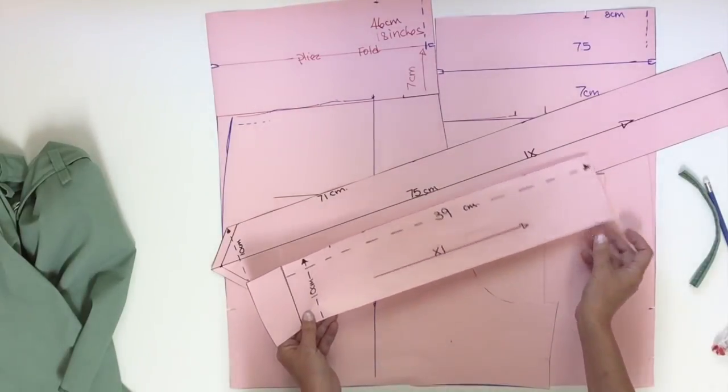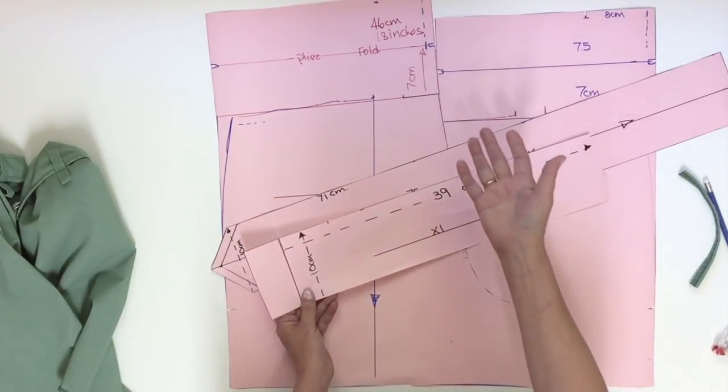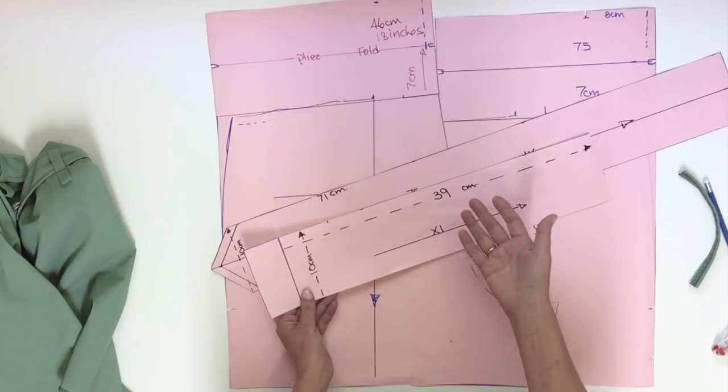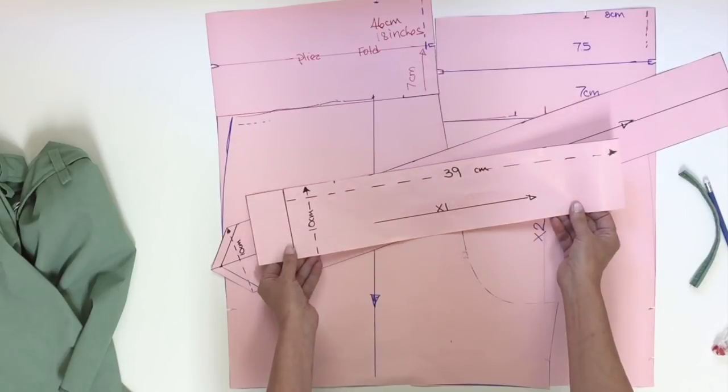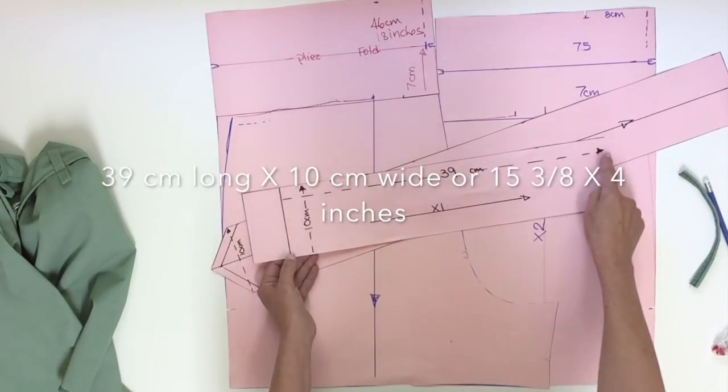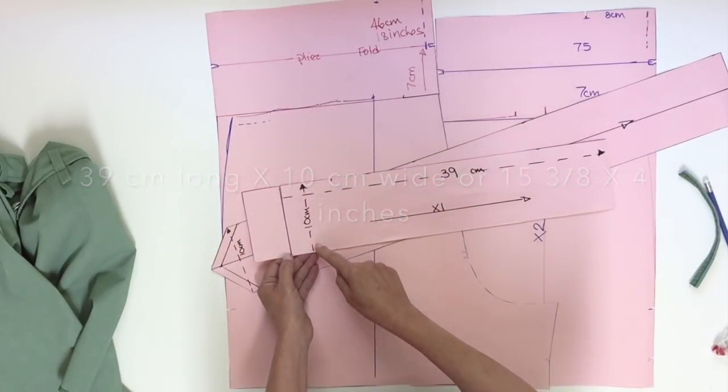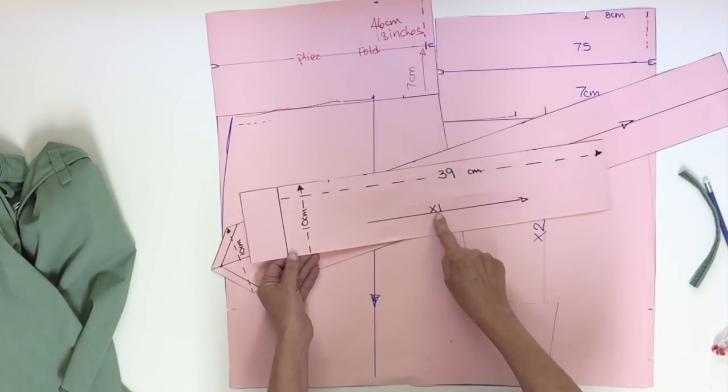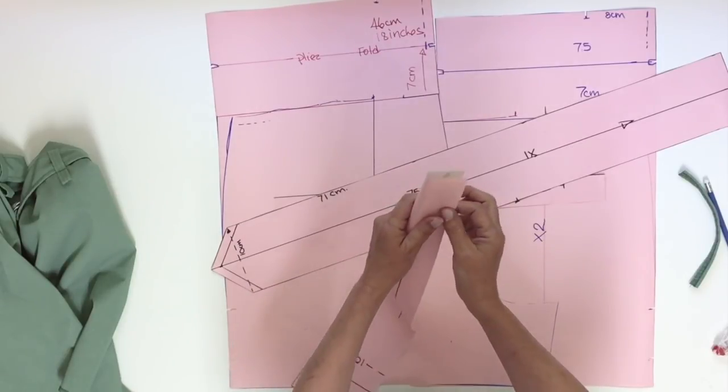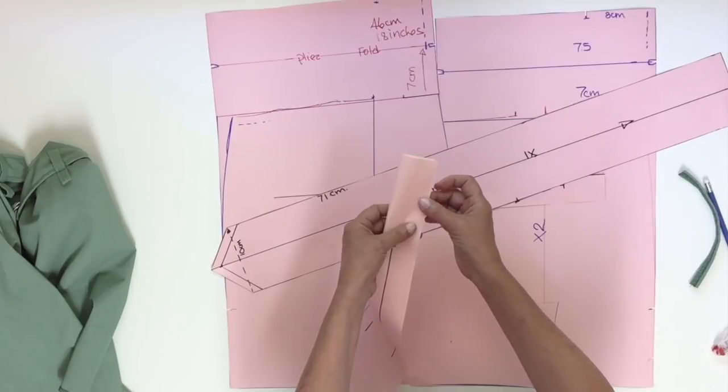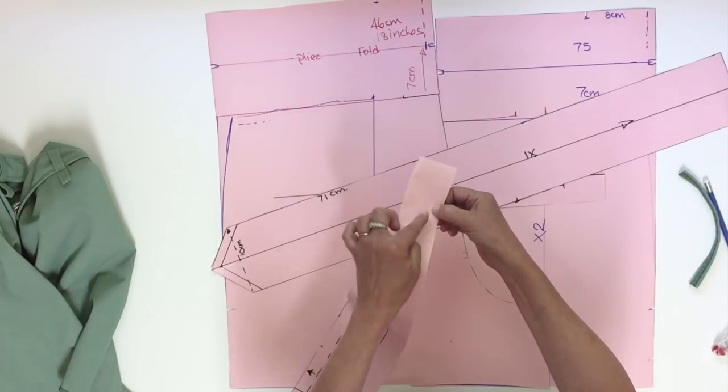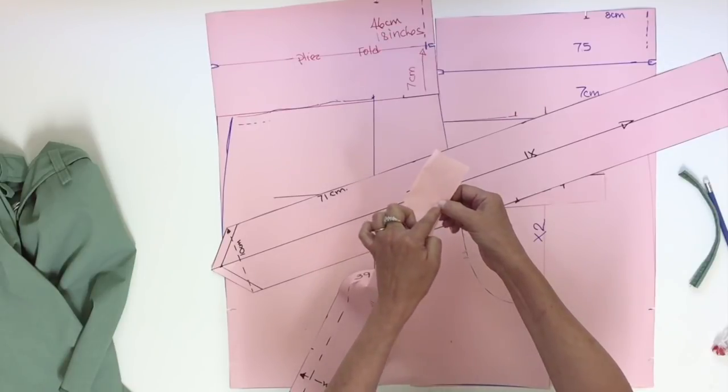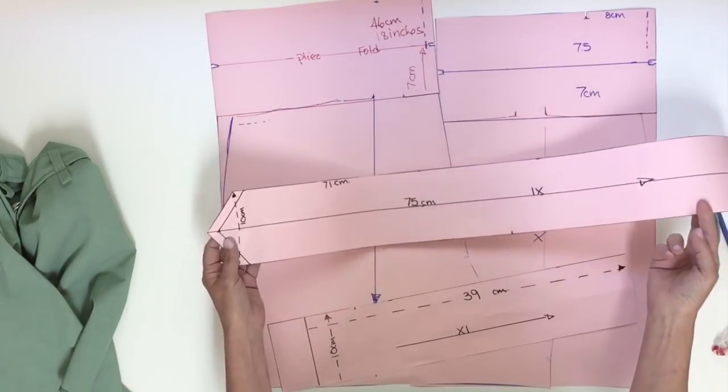Now for the belt, I decided to do it in two pieces so it would be easier for you to place on your fabric and cut. So the first one is a rectangle piece of 39 centimeters by 10 centimeters wide, and it's cut one time. Once it's sewn as a tube, using a one centimeter seam allowance, it's going to give you a belt of four centimeters finished width.